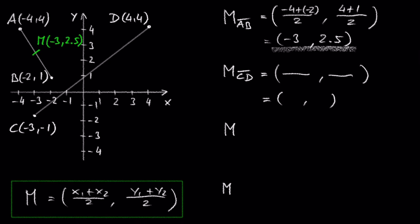Plug in negative 3 for x1 and 4 for x2 and negative 1 for y1. We get negative 3 plus 4 is 1 and we keep the 2 at the bottom. Negative 1 plus 4 is 3 and we keep the 2 at the bottom.